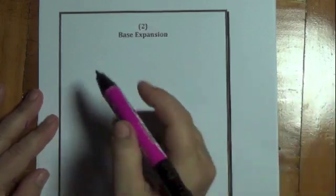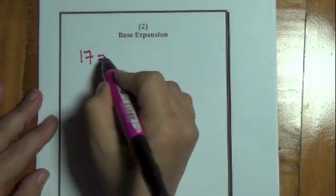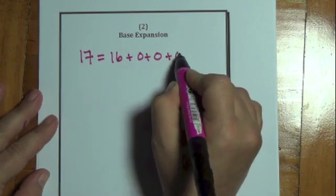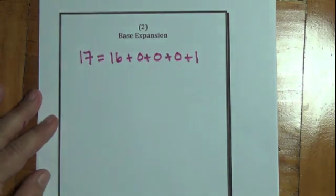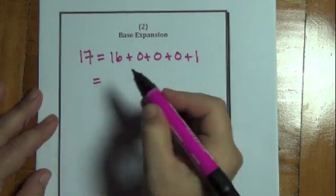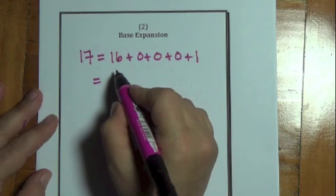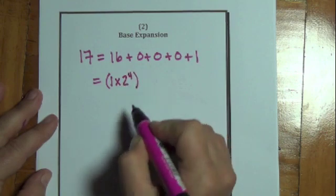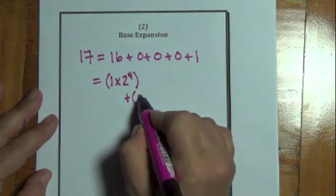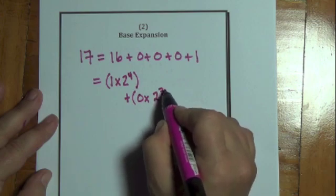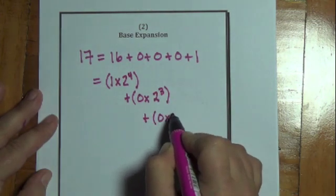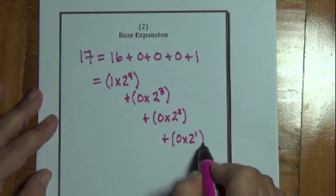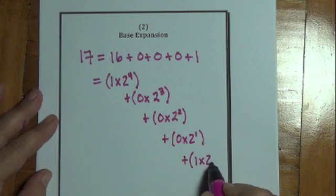Let's look at the number 17. 17 is equal to 16 plus 0 plus 0 plus 0 plus 1. I've written it this way because 16 is 2 to the 4th power. So I could write this as 1 times 2 to the 4th plus 0 times 2 to the 3rd plus 0 times 2 to the 2nd plus 0 times 2 to the 1st power plus 1 times 2 to the 0 power.